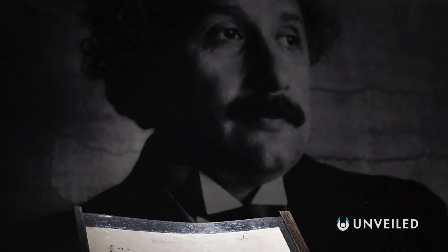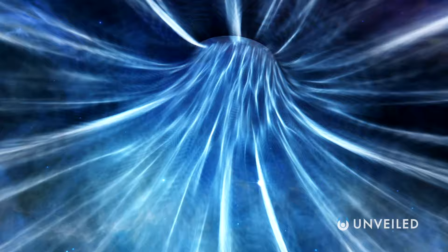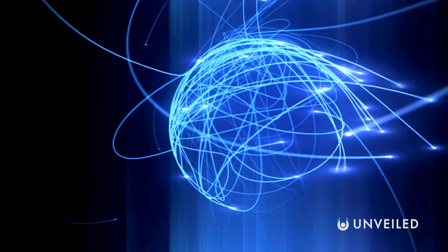Einstein's theory of special relativity was published in 1905. Special relativity posited that the speed of light in a vacuum is the same, regardless of the motion of the light source or an observer. In short, this means that nothing, not even gravity, can move beyond the speed of light.